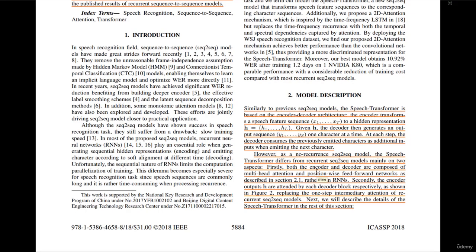Similarly to previous Sequence-to-Sequence models, the Speech Transformer is based on the encoder-decoder architecture, where the encoder transforms a speech feature sequence to a hidden representation. Given that representation, the decoder generates an output one character at a time. At each step, the decoder consumes the previously emitted characters as additional inputs when emitting the next character.